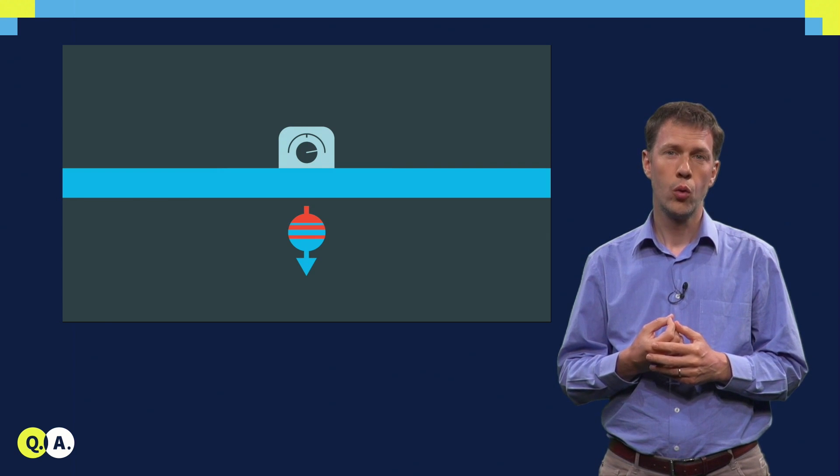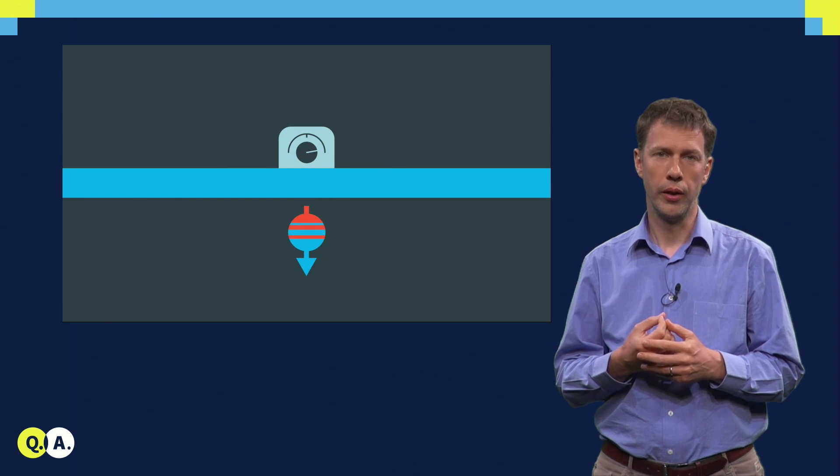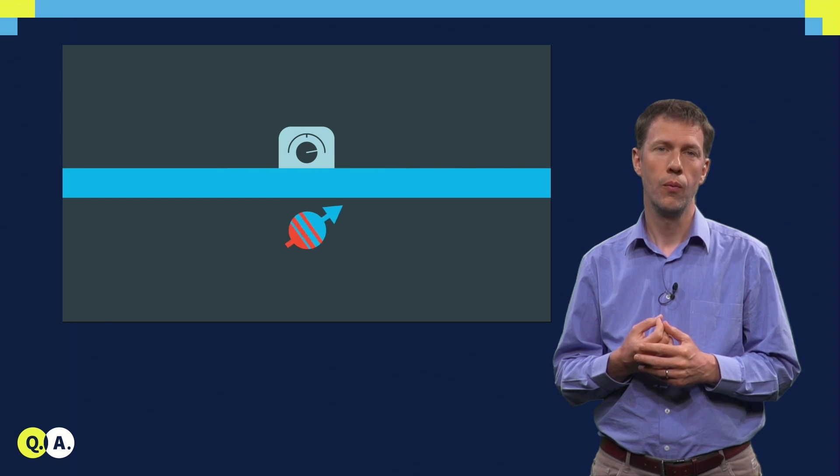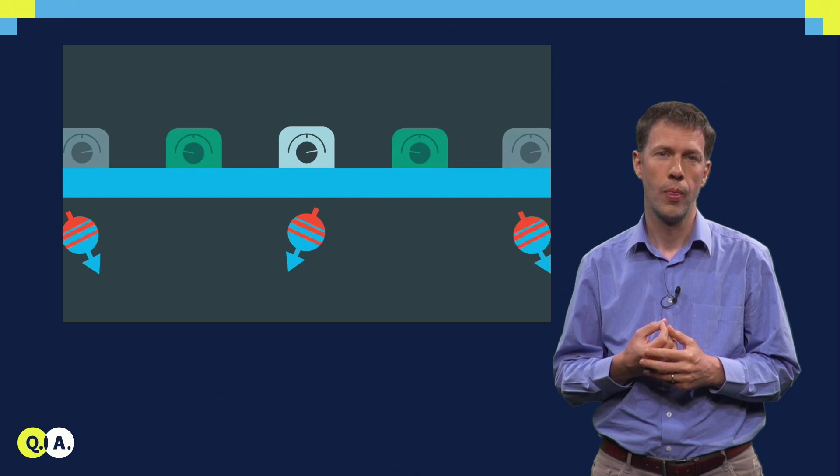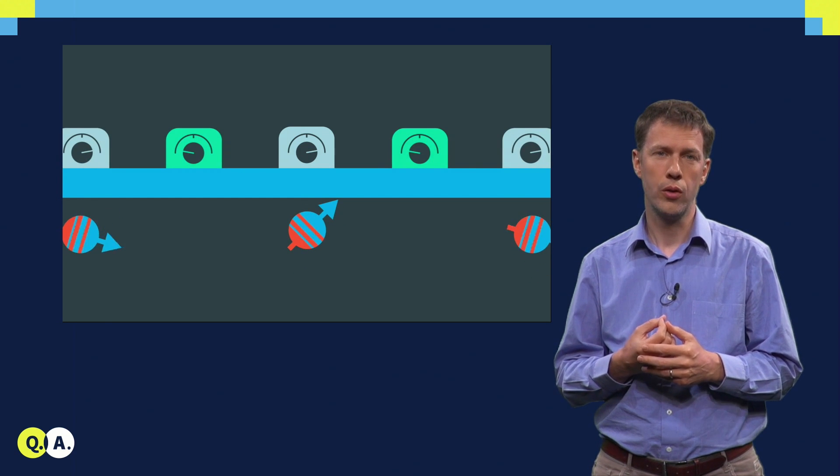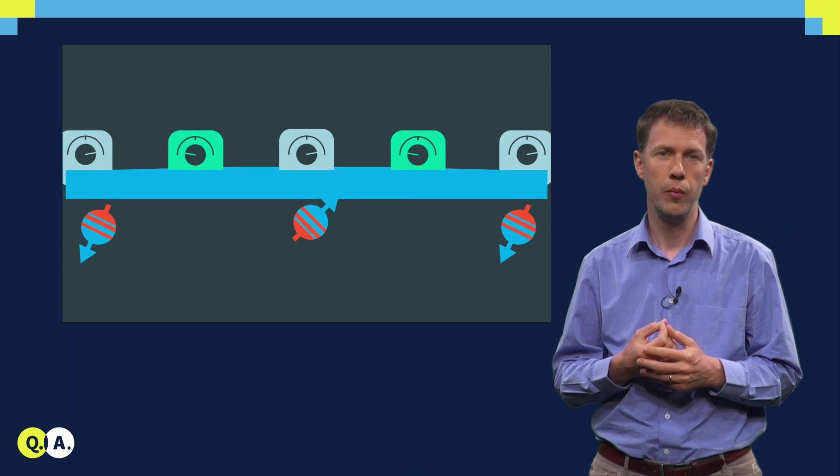Now, even if quantum dot arrays are placed along a line, eventually we do need two-dimensional arrays. Bringing individual wires to all the qubits in a two-dimensional array may be very difficult.